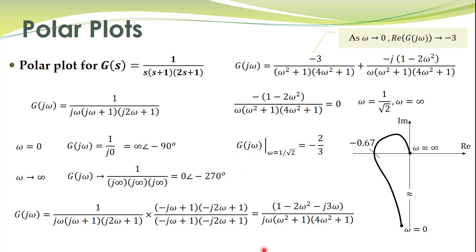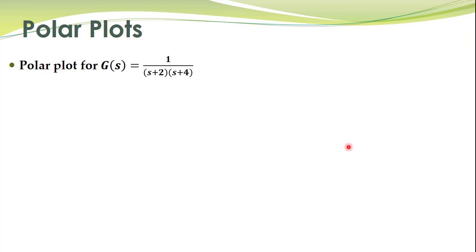The point minus 2/3 is the crossing and minus 3 is further to the left. So a more precise sketch starts from around minus 3, passes through the crossing at minus 2/3, and continues to the origin. However, that level of accuracy is not generally required.